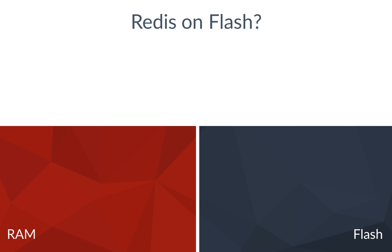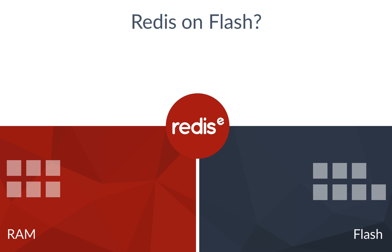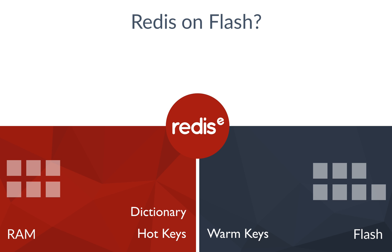Redis is virtually synonymous with in-memory database — that is, storing your data in the RAM of a server. Redis on Flash extends your storage beyond system memory into a solid-state disk. The Redis Dictionary, the data structure behind Redis keys, and the data at the most used keys — we'll call them hotkeys — are stored in RAM. The data at the less used keys, called warm keys, gets shuffled into Flash memory.